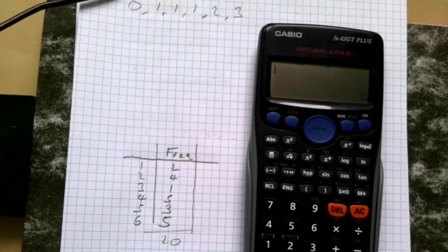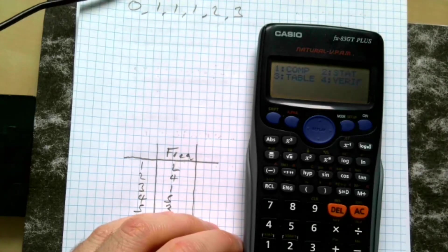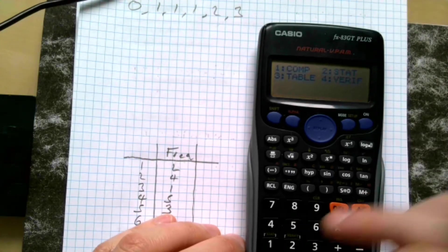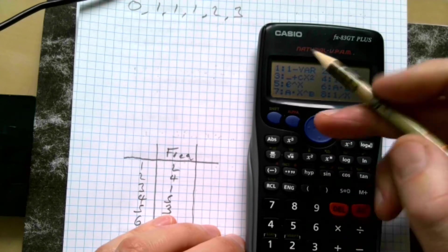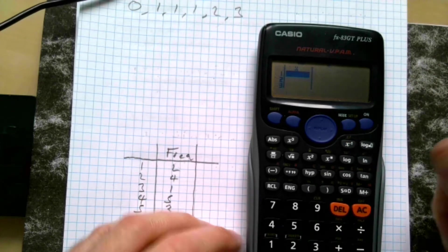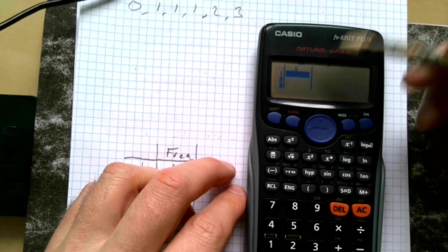First of all, we need to make sure we're in stats mode, so if we go to the mode button here and select two, we want the one variable option. As you can see here, this has brought up just the one column.